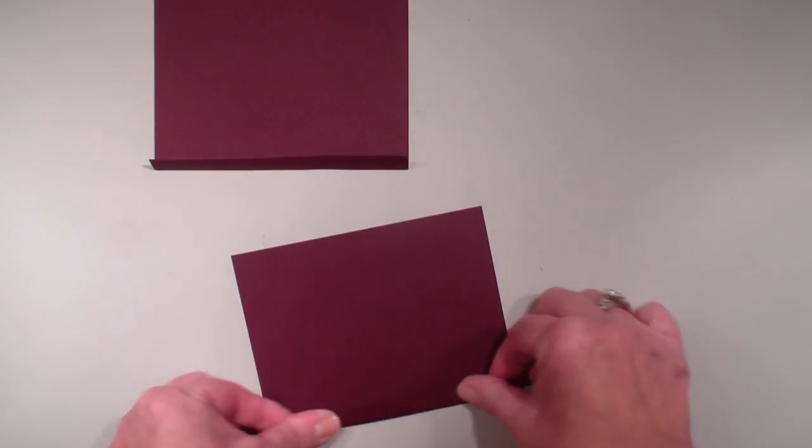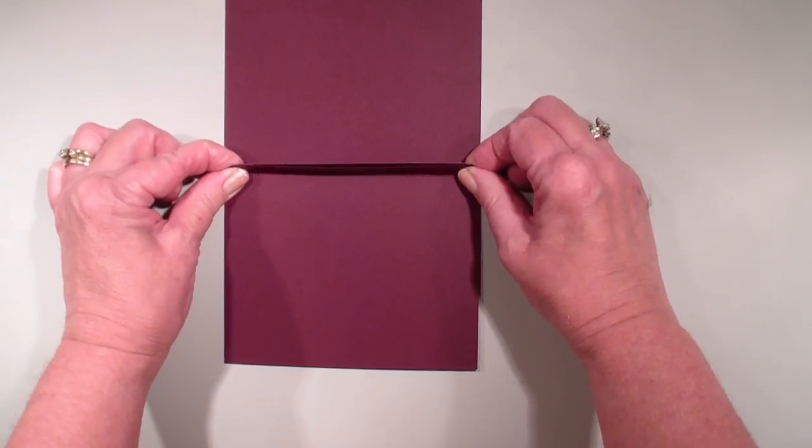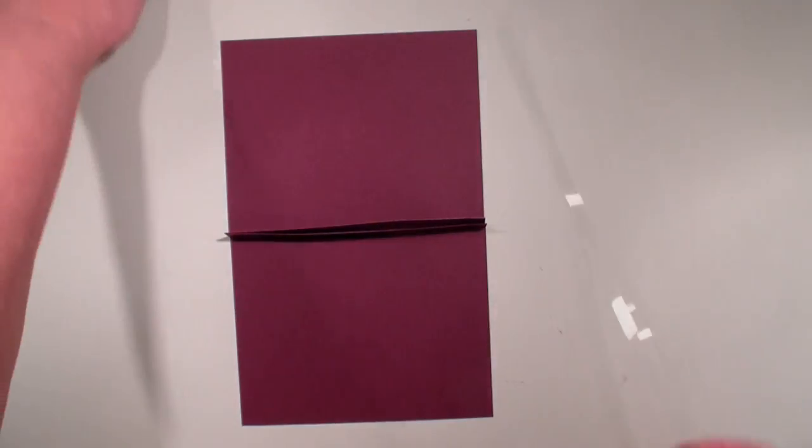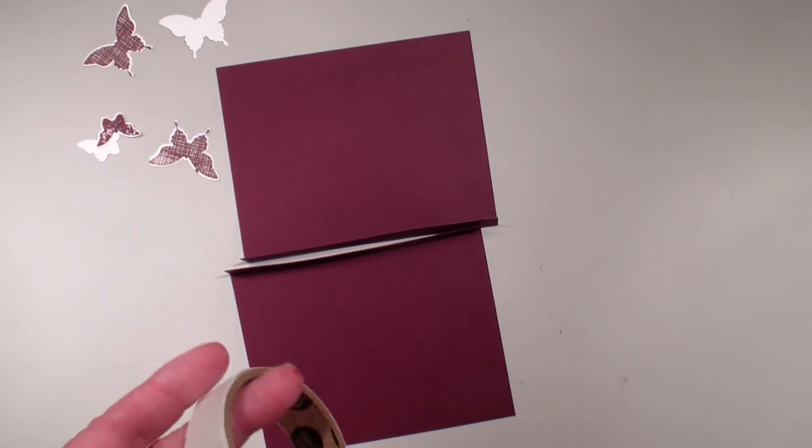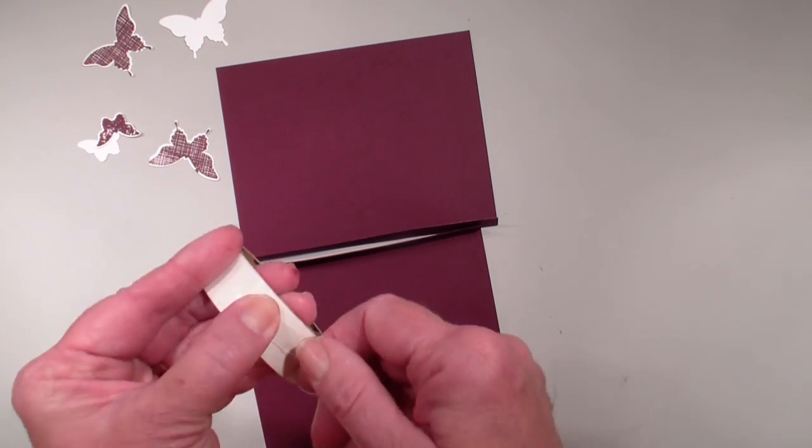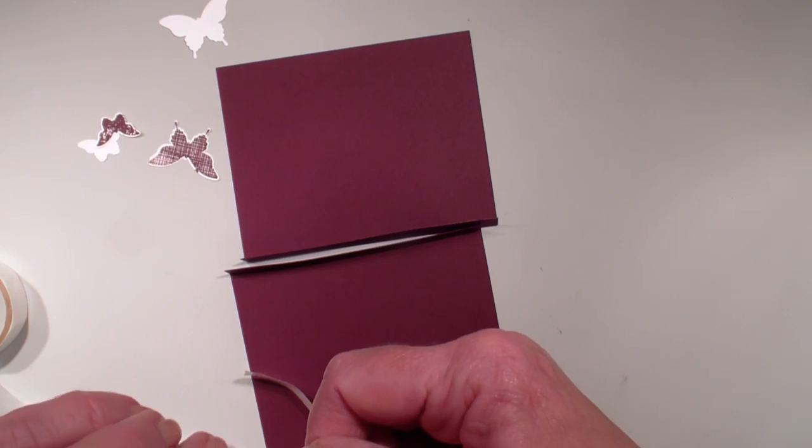So we are going to just glue those two together. I have got window sheets. I have already punched out my butterflies, and so what I have found the best thing to do is to use my glue dots right on that window sheet. So I've got that.